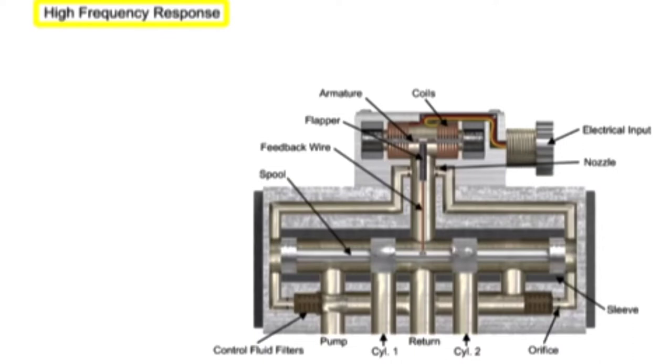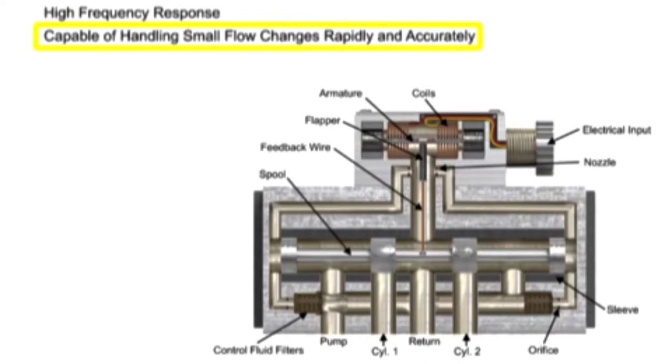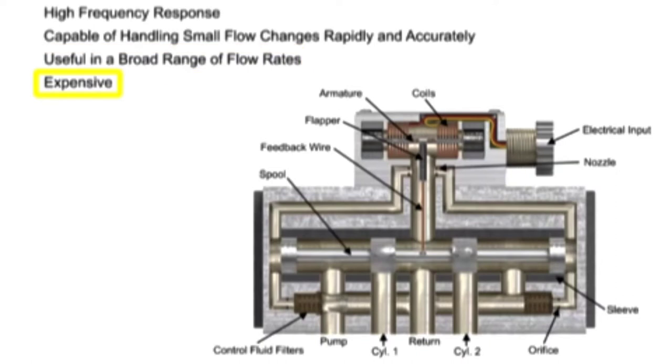Servo valves are highly responsive and capable of handling minuscule flow changes both rapidly and accurately over a broad range of flow rates, but at an extra cost. The main difference between proportional and servo valve circuit design is that servo systems have a method of feedback that assures that the actuator is doing what the controller tells it to do.